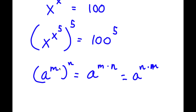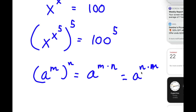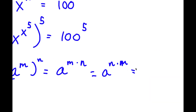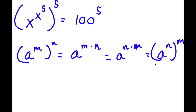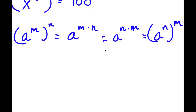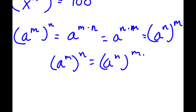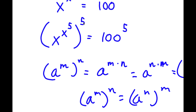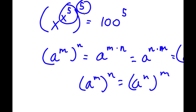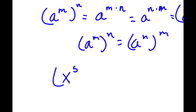Now, if something in the form a to the power of m to the power of n equals a to the power of m times n, then a to the power of n times m should equal a to the power of n to the power of m. So I can rewrite a to the power of m to the power of n as a to the power of n to the power of m. In this case, I can think of x to the power of 5 as m and 5 as n, so if I swap them I get x to the power of 5 to the power of x to the power of 5 is equal to 100 to the power of 5.